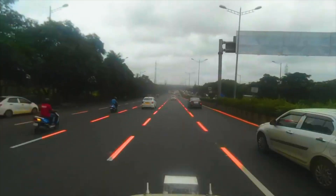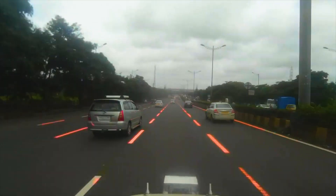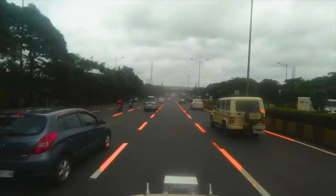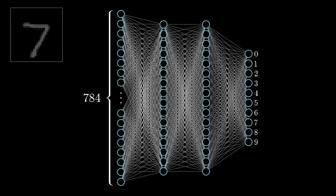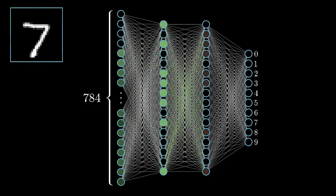The computer vision subsystem of Cedrica works on these captured images and makes interpretations. The images taken by the cameras are sent to the convolutional neural network, which carries out three main tasks.